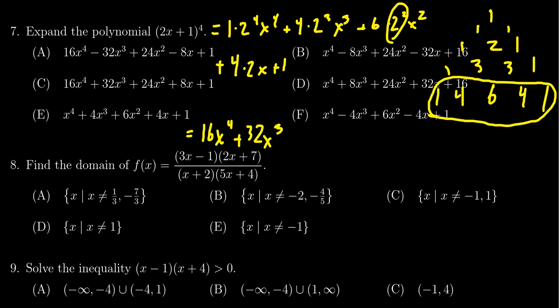The next one, you have 2 squared which is 4, times 6 is 24, so 24x squared. Next, we have 4 times 2 which is 8, so you get 8x, and you get a plus 1.